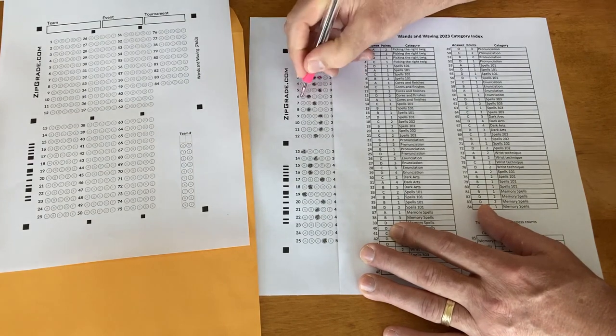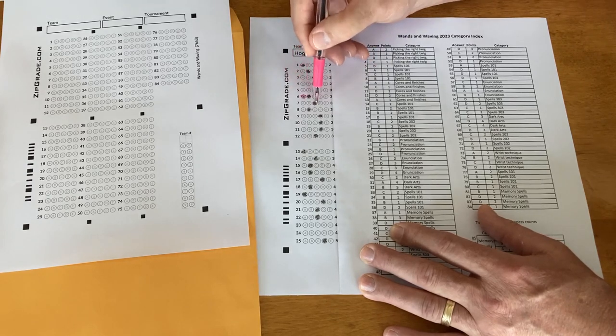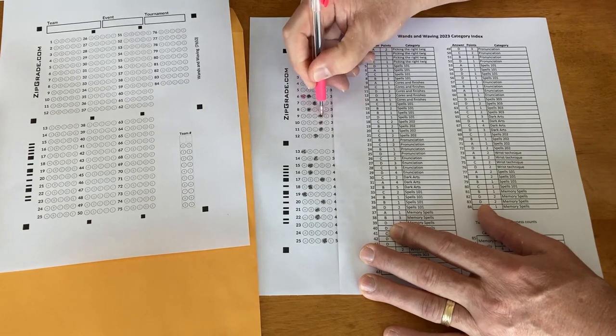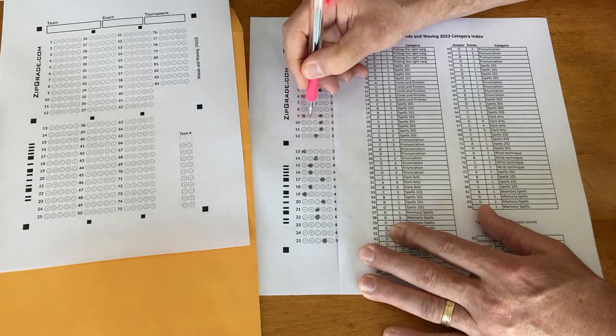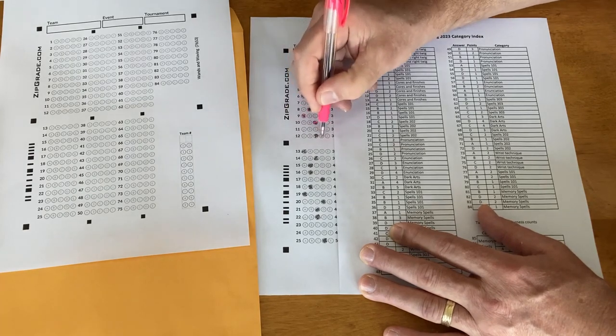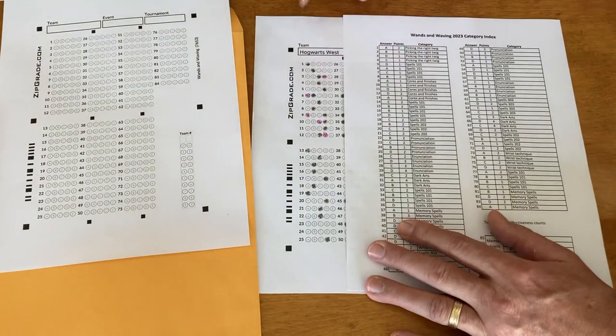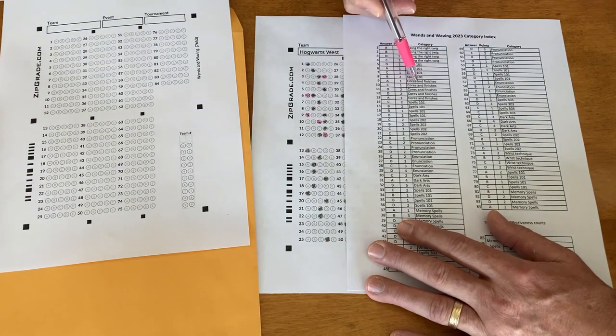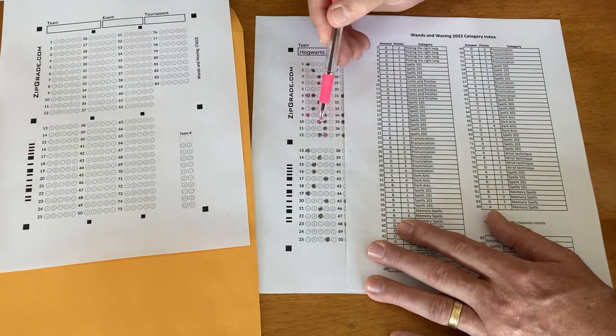In this case, A is the correct answer, B was the correct answer here, D was the correct answer here, C is good, D is good, A would be the correct answer there. Question seven C is good, eight is B, nine is A, ten is C, eleven is D, twelve is D. Looking at this and comparing it to the category index, the students missed a few questions along the way, but when they got to the topic of Cores and Finishes, it looks like they don't really maybe know what the right answers are.